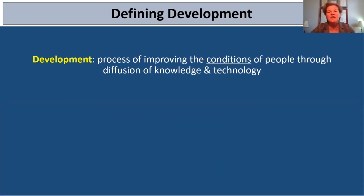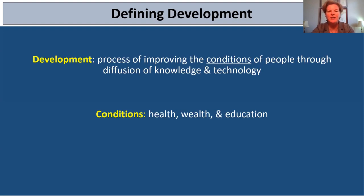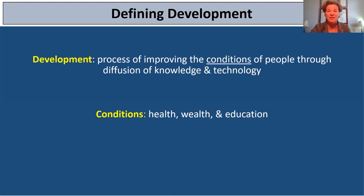Going back to the definition — a process of improving the conditions of people through diffusion of knowledge and technology — what are those conditions that improve people's lives? There are actually three basic dimensions of human development: health, wealth, and education. These things are going to vary from country to country, from region to region, and sometimes within countries — small particular regions within a country.